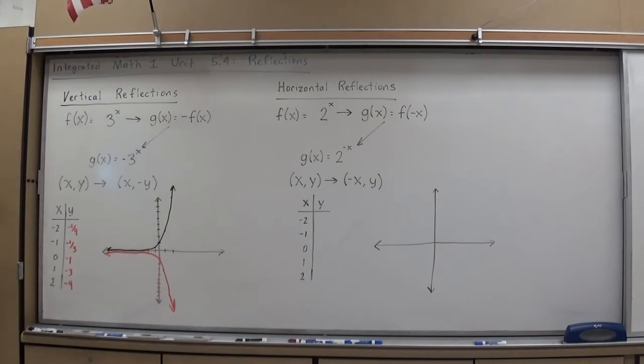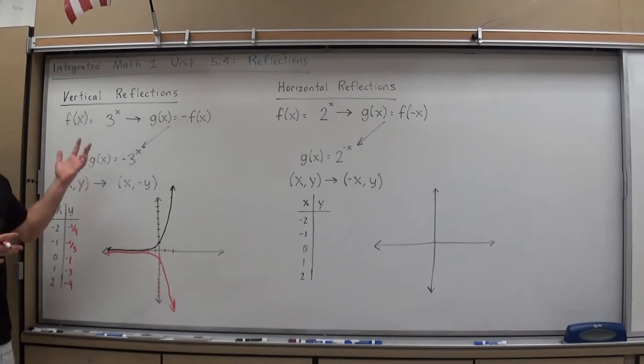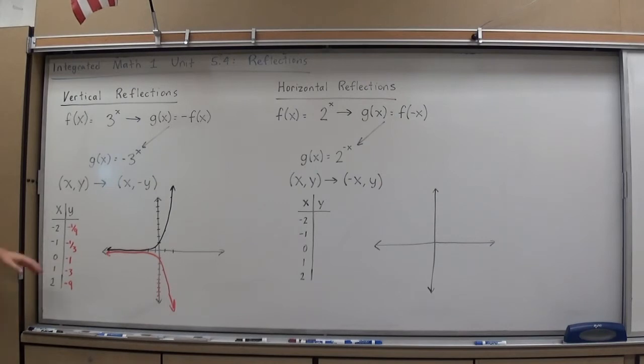So there are some shortcuts there. If you do have a function and you want to just use the table for that original function and then just change all the signs, you can. For most of the beginning ones you do in integrated math 1, it's probably better just to use your table for the new function or just use the transformations as a check. As long as we're aware of the fact that it is a vertical reflection, we'll be good. So negative out front reflects it vertically.